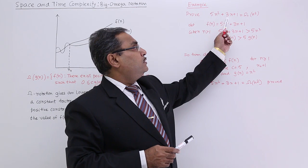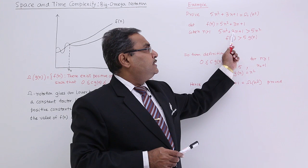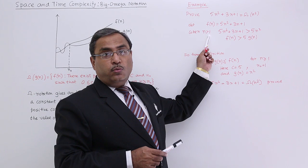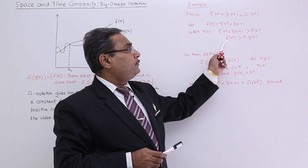Example: prove that 5n² + 3n + 1 is equal to big omega of n². Here I am considering this one as f of n. Obviously, this f of n is greater than 5 into n² when n is greater than 1.